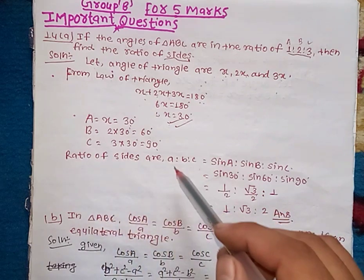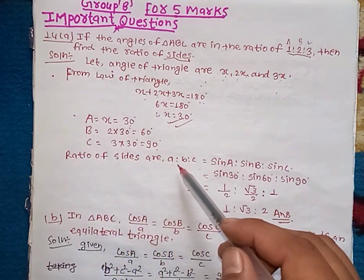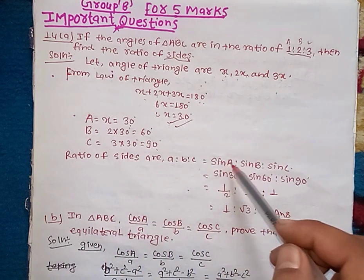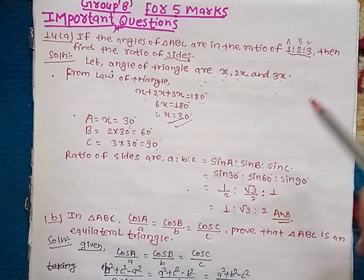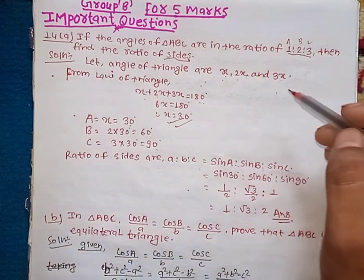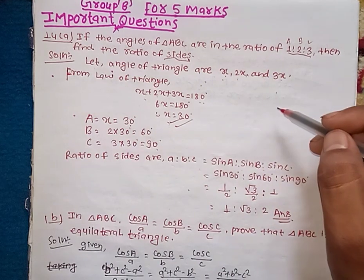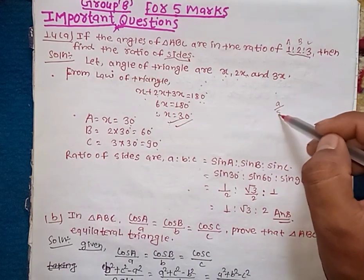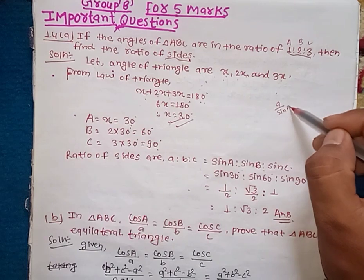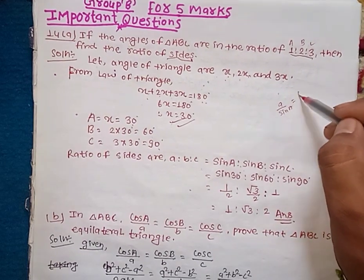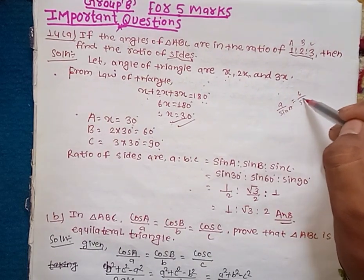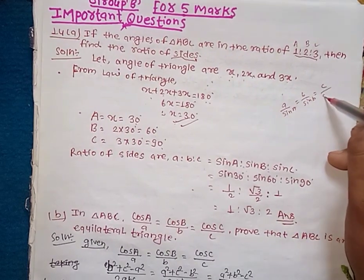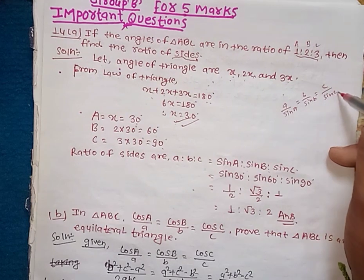The ratio of the sides A to B to C equals sin A to sin B to sin C, using the sine rule: a over sin A equals b over sin B equals c over sin C.